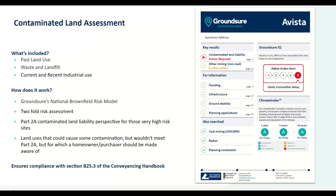When we talk about contaminated land assessment, regardless of which report you're looking at, you get a full contaminated land assessment within a Groundsure environmental report. The contaminated land capital grant funding scheme has been scrapped, so the traditional way of assessing contaminated land risk has actually changed. We now provide a twofold risk assessment in every single report: the first part is a Part 2A contaminated land liability perspective for very high risk sites, and the second covers land uses that could cause some contamination but wouldn't actually meet Part 2A, but for which a homeowner or purchaser should be made aware.